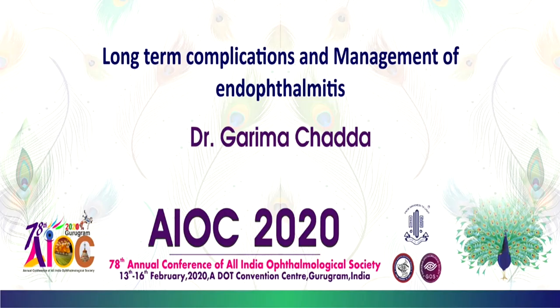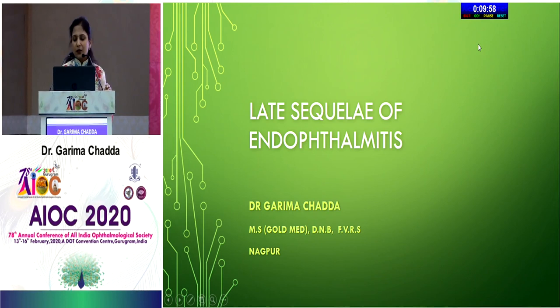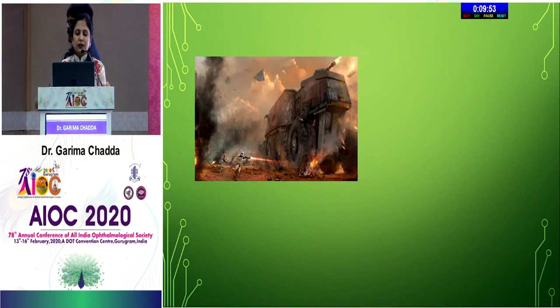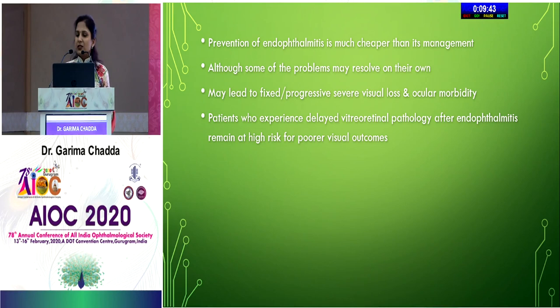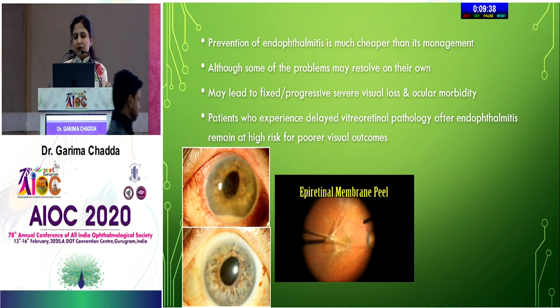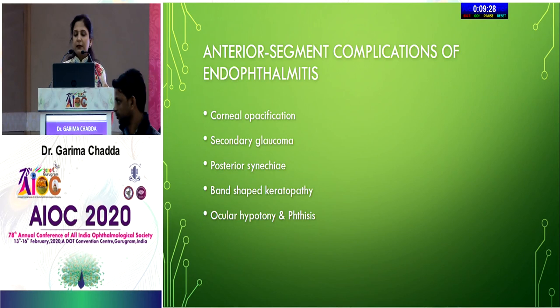Dr. Garima discusses long-term complications of endophthalmitis. Prevention is much cheaper than management, and while some cases resolve well, others need secondary interventions, and at times the eye is lost. Anterior segment complications include corneal opacification, secondary glaucoma, posterior synechia, band-shaped keratopathy, ocular hypotony, and phthisis. Corneal opacity is more common when hypopyon is extensive and chronic; bullous keratopathy and band-shaped keratopathy appear later.